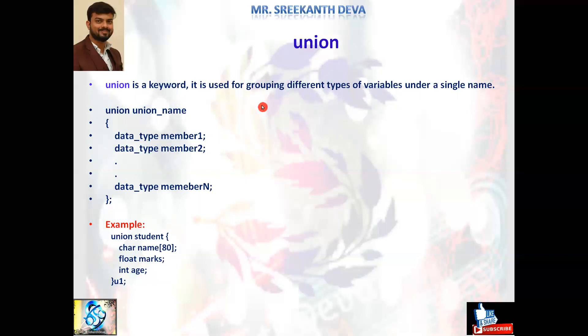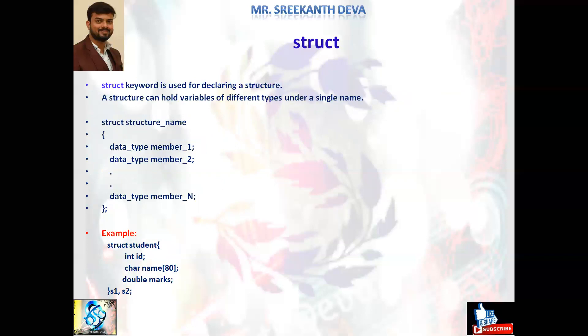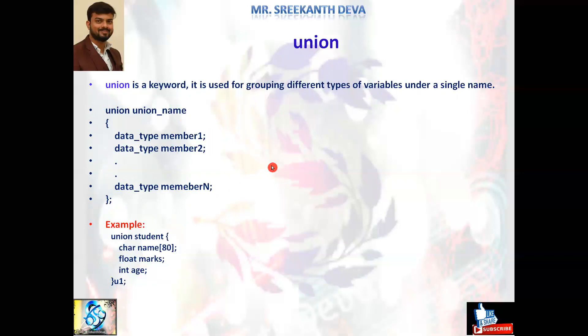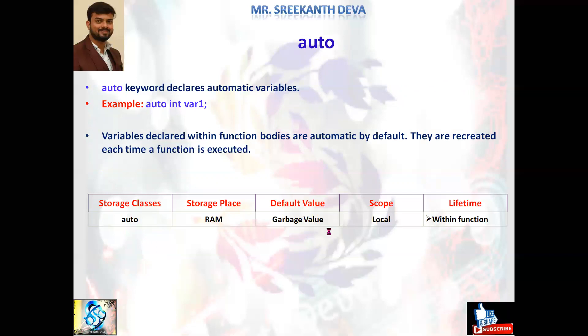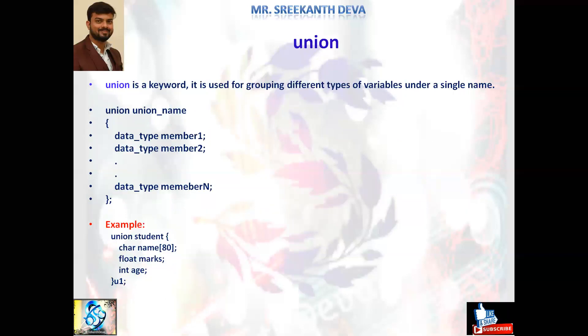union is a keyword used for grouping different types of variables under a single name. It is similar to structure. The difference is that structure allocates separate memory for each member, but union allocates only one memory location — the maximum size — and reuses the same memory location for all remaining data types. We will discuss struct and union programs with examples and differences in coming video sessions.